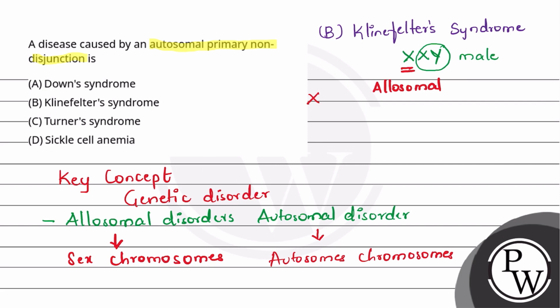Turner syndrome. Here, deletion of X chromosome. There is a deletion of one X chromosome. This is also an allosomal disorder. This is a genetic disorder. This is why Turner syndrome is not the right option.